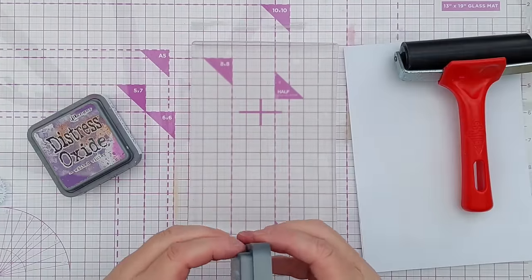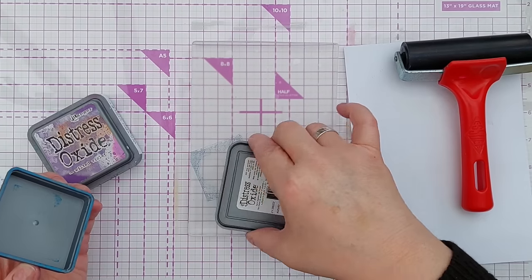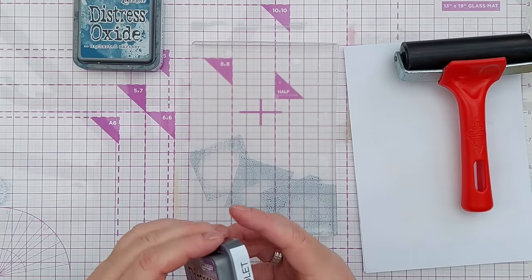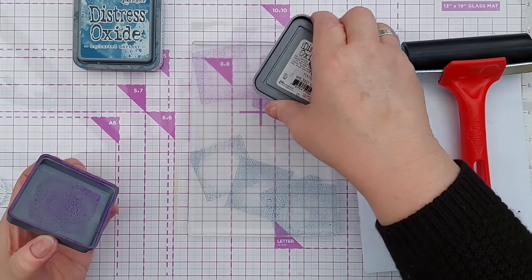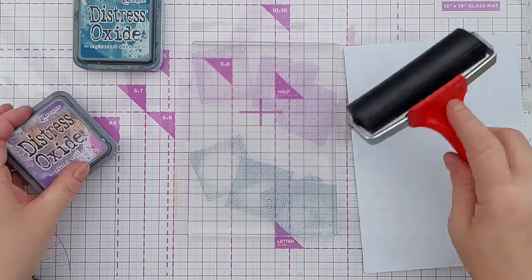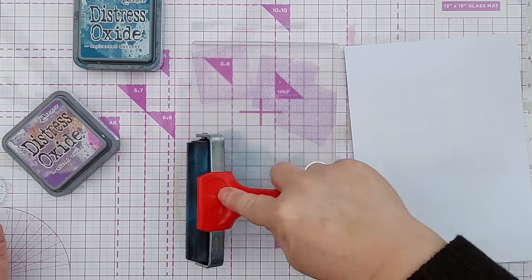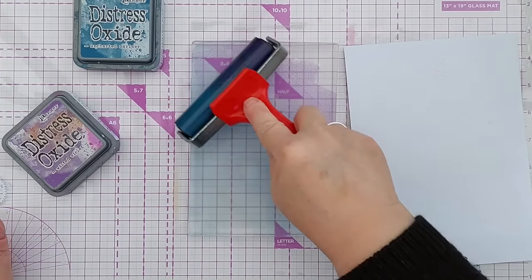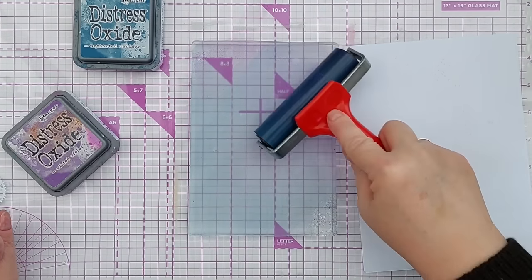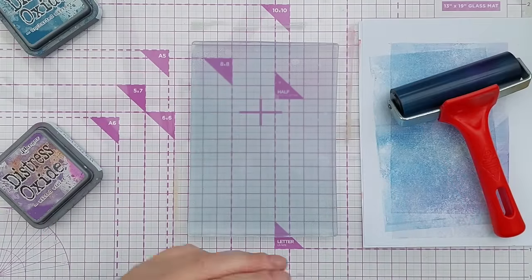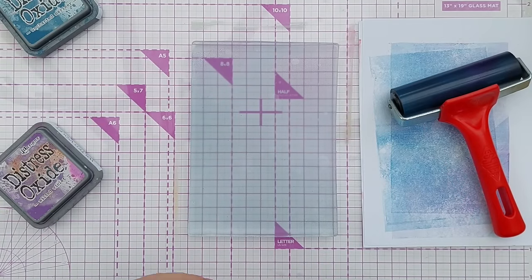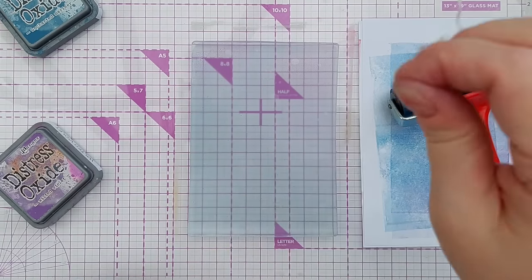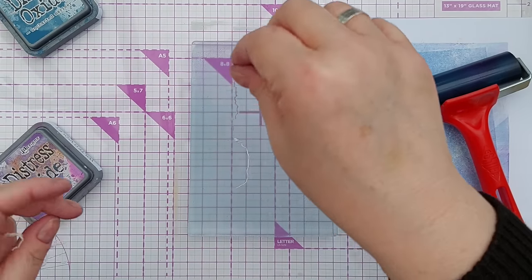For this next print I'm going to use uncharted mariner and wilted violet, both cool colors should work together fine, and spread them out, might go on a bit of a diagonal this time. And now I've got some string here and I've split it up into its individual strands.